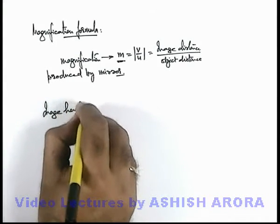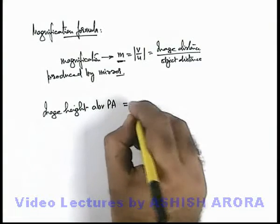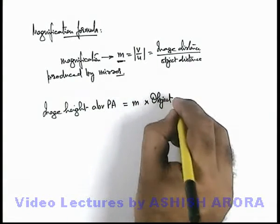Now this magnification is used to relate the image height and object height above principal axis. So using this magnification we can write that image height above principal axis is equal to magnification times the object height.